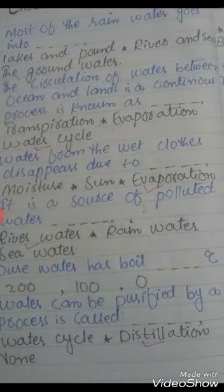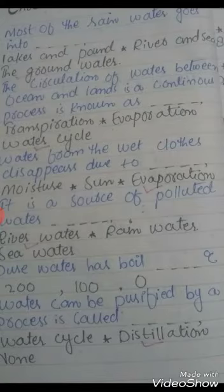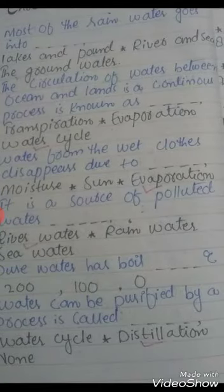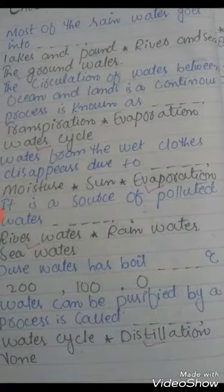Number 2: The circulation of water between ocean and lands is a continuous process known as dash. Options: transpiration, evaporation, water cycle. Correct option is water cycle.